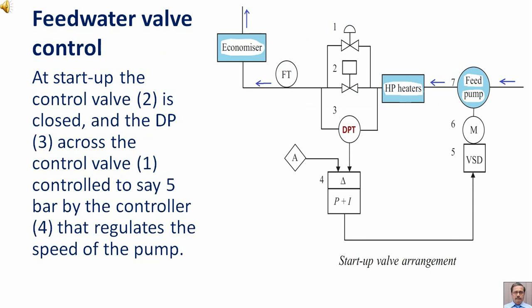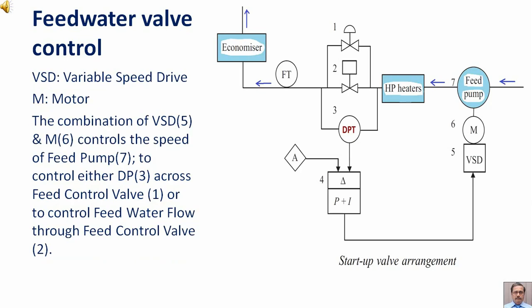At startup the control valve second item is closed, and the DP third item across the control valve one, the control valve second item, is controlled to 5 bar by the controller fourth item that regulates the speed of the pump. VSD variable speed drive, M motor. The combination of VSD and M controls the speed of feed pump to control either DP across feed control valve first item or to control feed water flow through feed control valve second item.